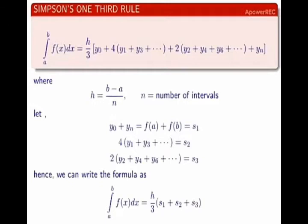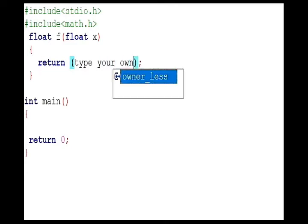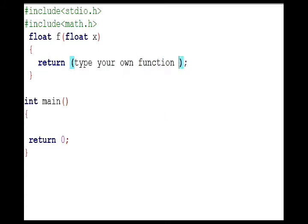Now we write the code for the program. We include two header files here: stdio.h for the standard input output functions such as printf and scanf functions, and math.h for the mathematical functions like sine x, log x, e to the power x, etc. Now we define our function. You can also use the #define directive for defining function.